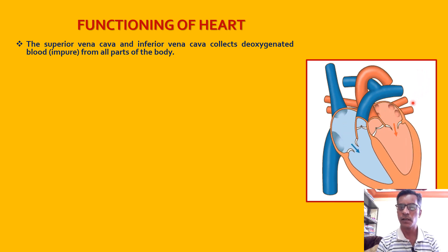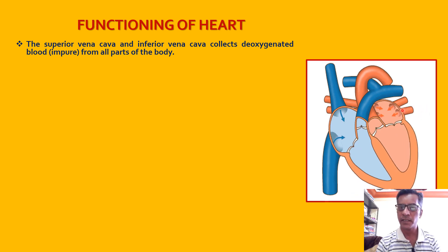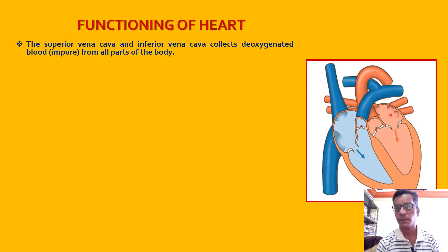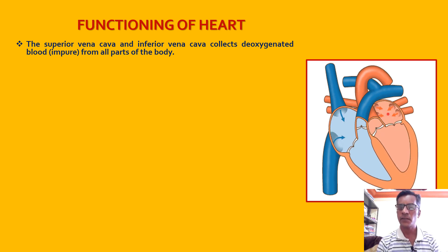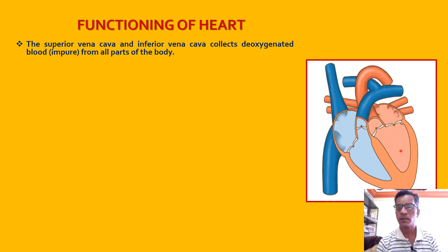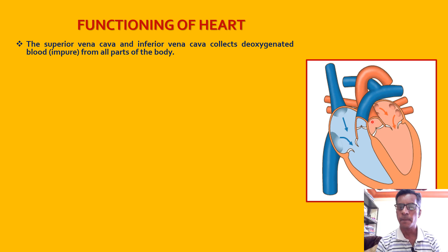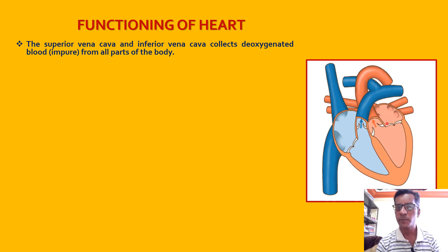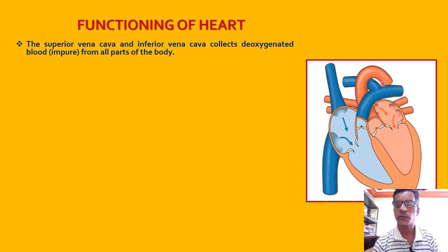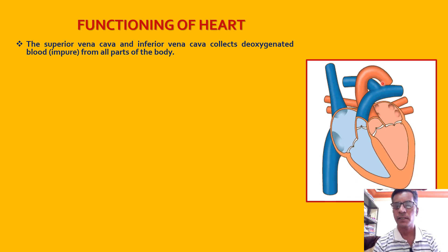After gas exchange in the lungs, the blood becomes oxygenated. This oxygenated blood enters the heart through the pulmonary veins into the left auricle. As the left auricle receives the oxygenated blood, on contraction the blood moves into the left ventricle through a special structure called the bicuspid valve. On contraction of the left ventricle, the blood rushes into the biggest artery called the aorta, which distributes blood to different parts of the body through many branches.